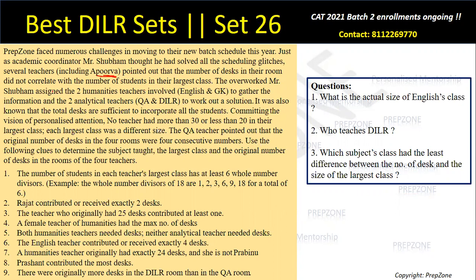The overworked Mr. Shubham assigned two humanitarian teachers involved — English and GK — to gather the information, and two analytical teachers — QA and DLR — to work out a solution. So in total there are four teachers. It was also known that the total desks are sufficient to incorporate all the students. There are four subjects: English, GK, QA, and DLR.